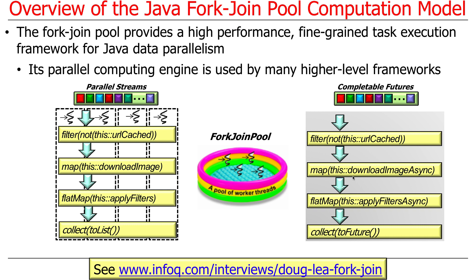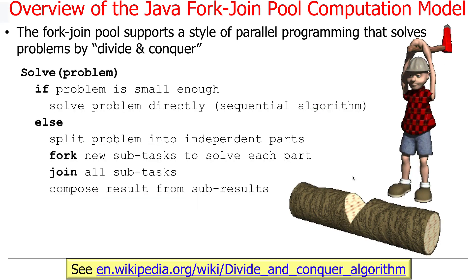For example, if you use Kotlin, which is a programming language popular on Android, the fork-join framework is used under the hood there. If you use Scala, which is another functional programming language, the fork-join framework is used there too. It's also used for other types of things, so it's a very common framework used by lots of stuff.